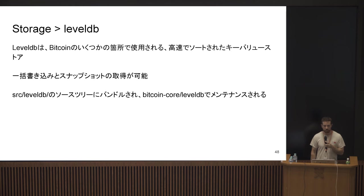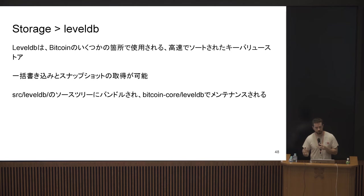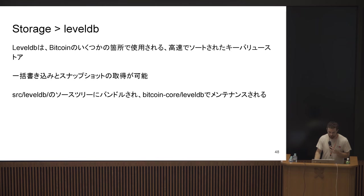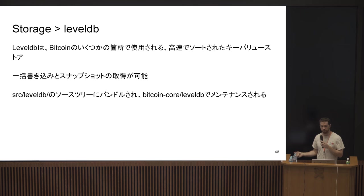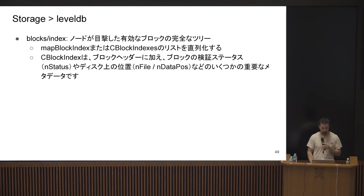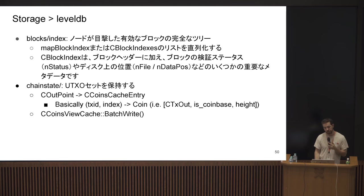LevelDB is another storage mechanism — a fast, sorted key-value store living on disk. It allows bulk writes and provides snapshots, which in theory we could use to get a snapshot of the UTXO set and pass it to some peripheral process instead of locking CS_main. It's bundled with the Bitcoin Core source tree — there's a repo called LevelDB in the Bitcoin Core GitHub organization where we maintain an instance and periodically merge from upstream. LevelDB holds the block index — the tree of all valid blocks we've seen — and something called chain state, which is basically just the UTXO set.